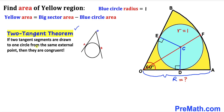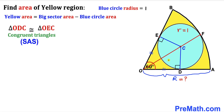By the two tangents theorem, if two tangent segments are drawn to one circle from the same external point, they are congruent. Therefore triangles ODC and OEC are congruent by the Side-Angle-Side congruency theorem. Since these triangles are congruent and the total angle AOB is 60 degrees, each half is 30 degrees. With the 90-degree angle and 30-degree angle, the remaining angle is 60 degrees.